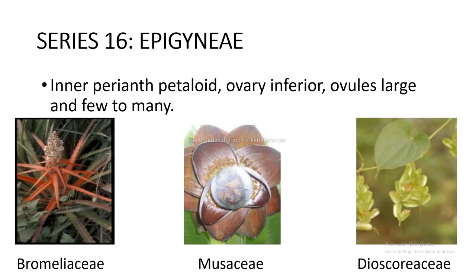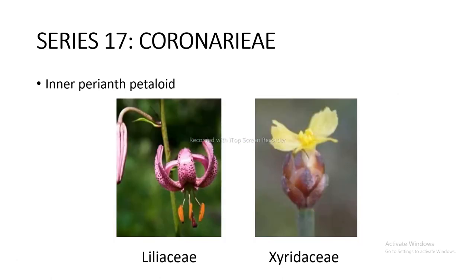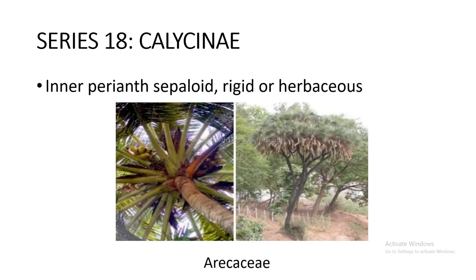Series 16 Epigynae — inner perianth petaloid, ovary inferior, ovules large, too many — includes Bromeliaceae, Musaceae, and Dioscoreaceae as shown in the figure. Series 17 Coronarieae — inner perianth petaloid — includes Liliaceae and Xyridaceae as shown in the figure. Series 18 Calycinae — inner perianth sepaloid, rigid or herbaceous — includes Arecaceae as shown in the figure.